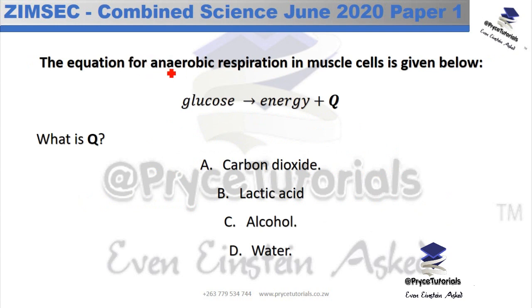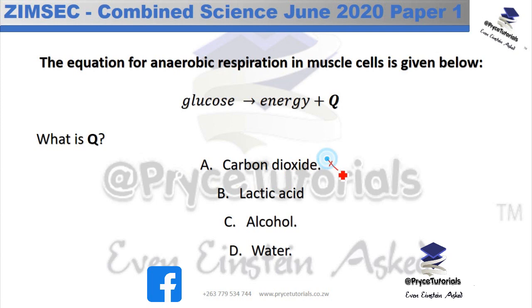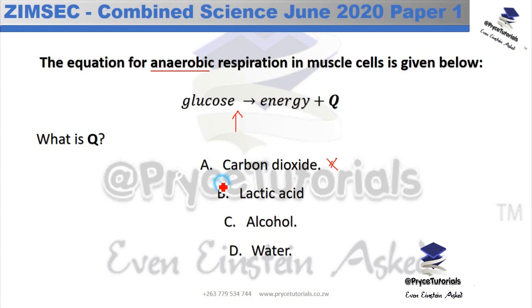The equation for anaerobic respiration in muscle cells is given: glucose → energy + Q. The question asks what Q is. Q is not carbon dioxide — that doesn't apply to anaerobic respiration. Since there is no oxygen in the equation, Q should be lactic acid.